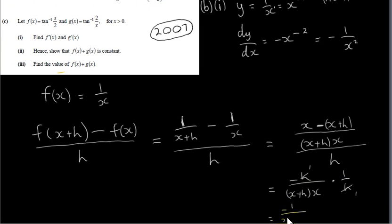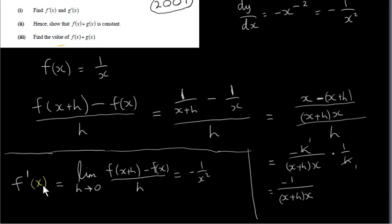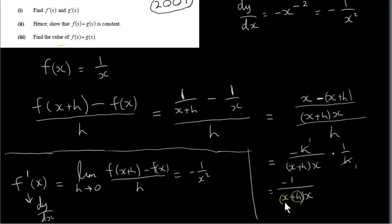Dividing by h is equivalent to multiplying by 1 over h, and the h's cancel, leaving minus 1 over x plus h times x. Finally, to get the derivative f prime of x, we take the limit as h tends towards 0 of f of x plus h minus f of x over h. Letting h go to zero gives minus 1 over x times x, or minus 1 over x squared.